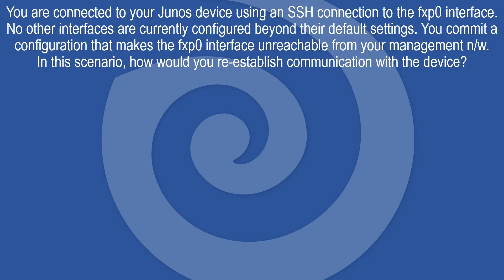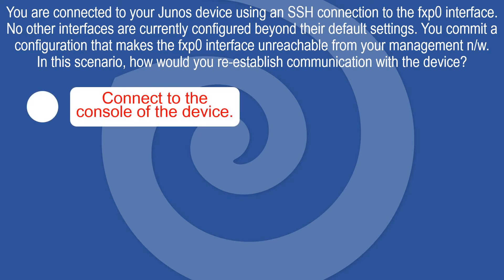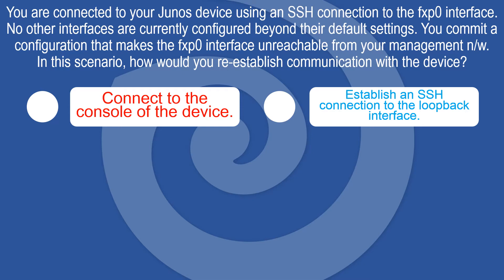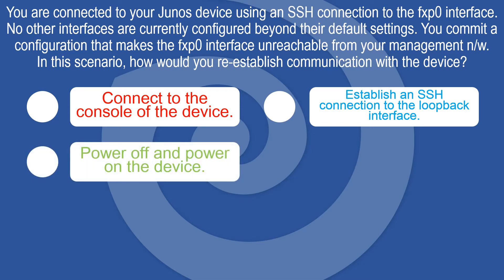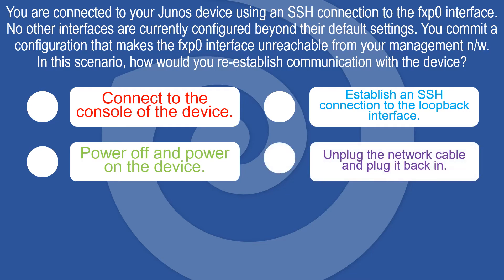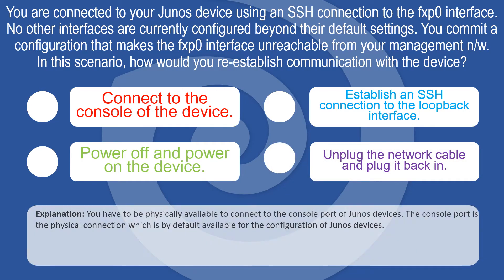You are connected to your Junos device via SSH to the FXP0 interface, with no other interfaces configured beyond default settings. You commit a configuration that makes FXP0 unreachable from your management network. In this scenario, how would you re-establish communication? You must connect to the console port of the device, which is the physical connection available by default for configuring Junos devices.